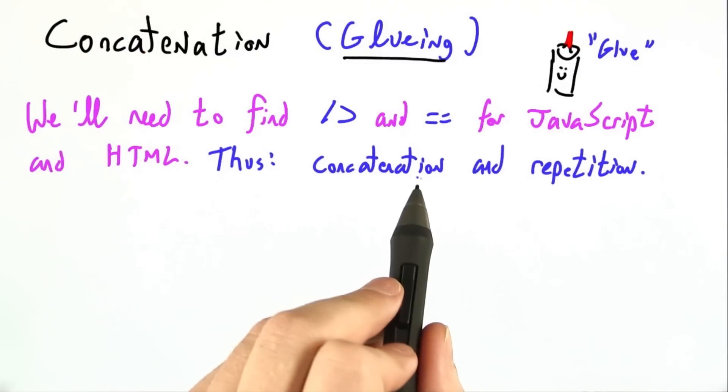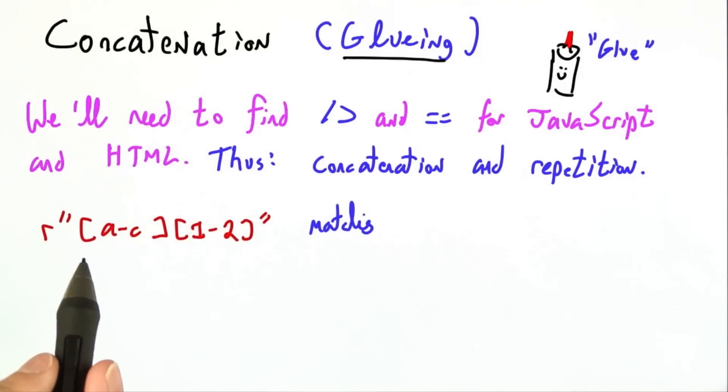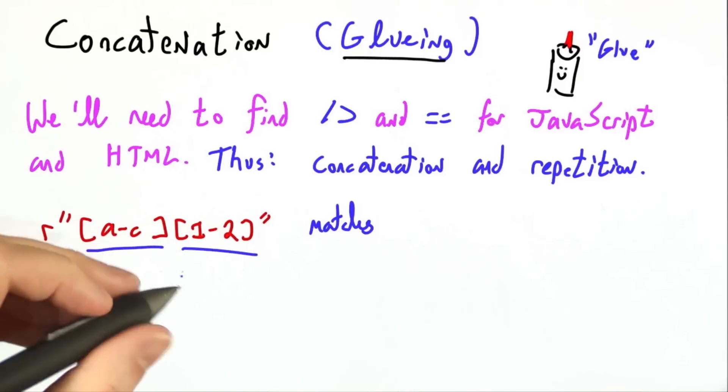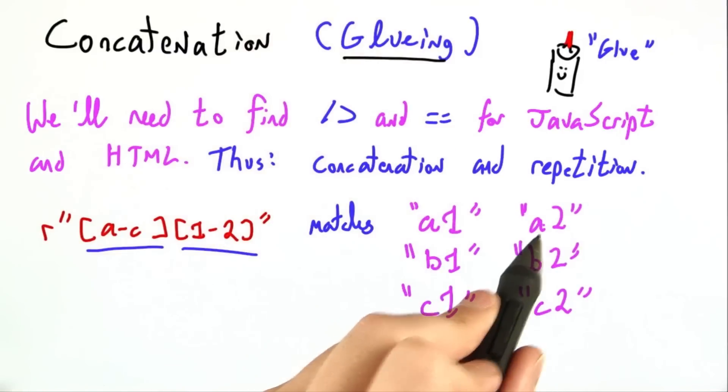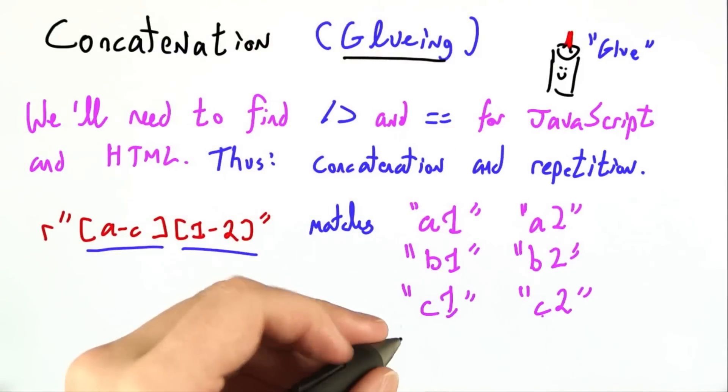Thus, we really need the ability to concatenate or put right next to each other and repeat regular expressions. Well, with regular expressions, that's actually as simple as just writing two regular expressions next to each other. This matches the string a1, a2, b1, b2, c1, and c2—six strings in all.